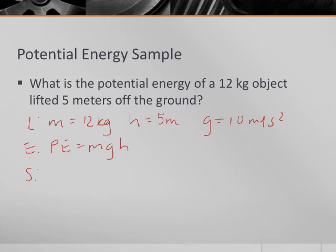If we plug in our numbers, we are going to have PE equals 12 times 10 times 5, or that's going to be equal to 600.